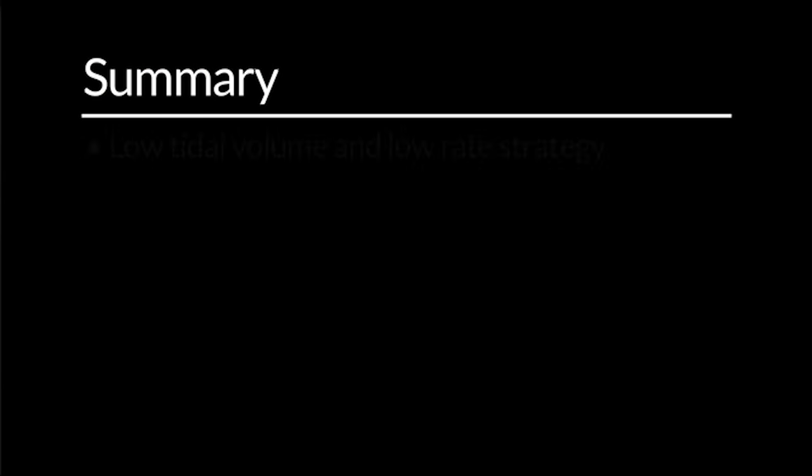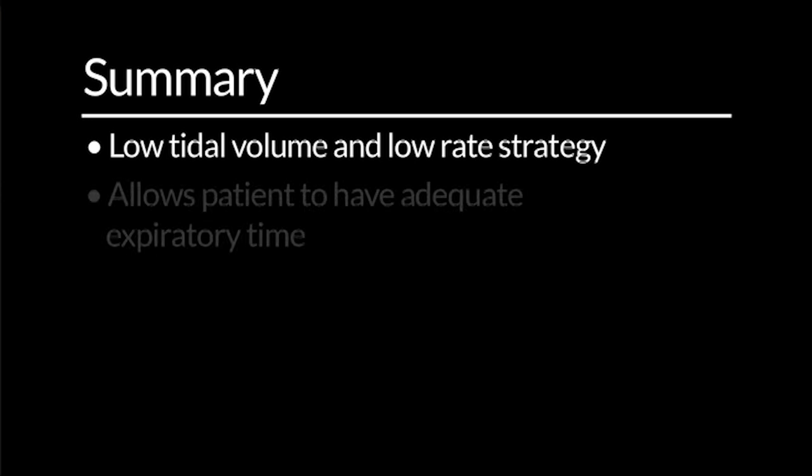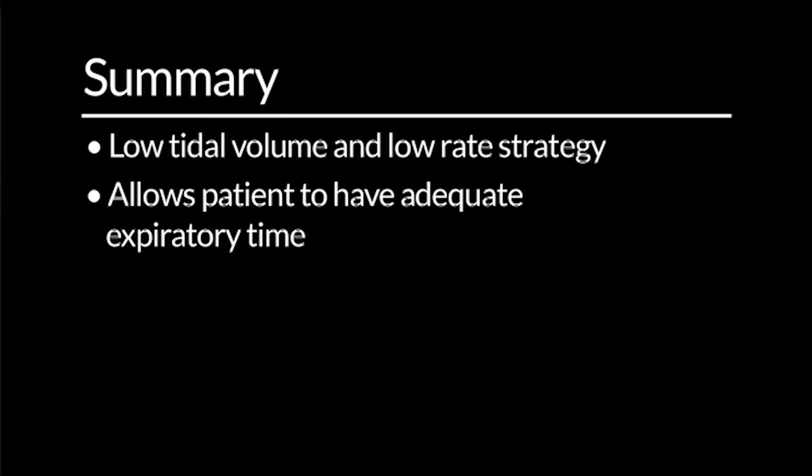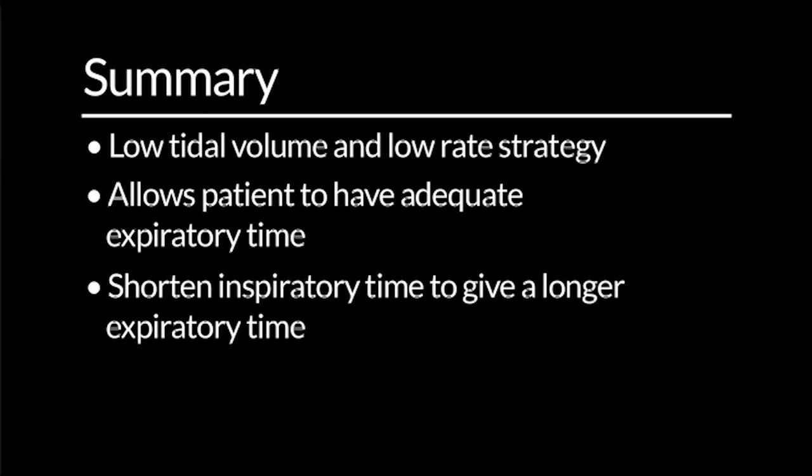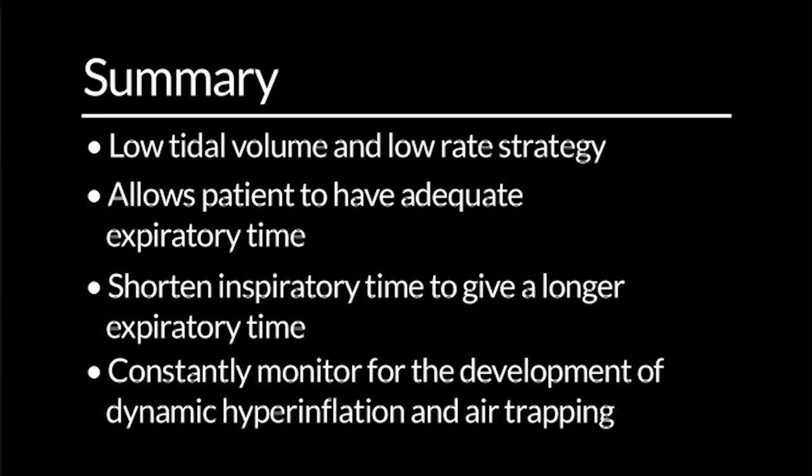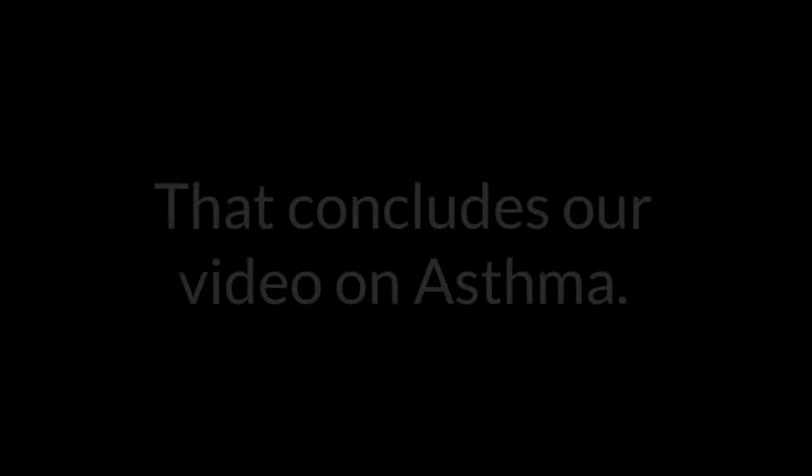To summarize ventilation during asthma: we use a strategy of low tidal volumes and a low respiratory rate — a low rate to give the patient a proper expiratory time. We can shorten the inspiratory time at the expense of the expiratory time to make expiratory time even longer. We must constantly monitor for the development of dynamic hyperinflation and air trapping. Thank you very much. That concludes our video on asthma.